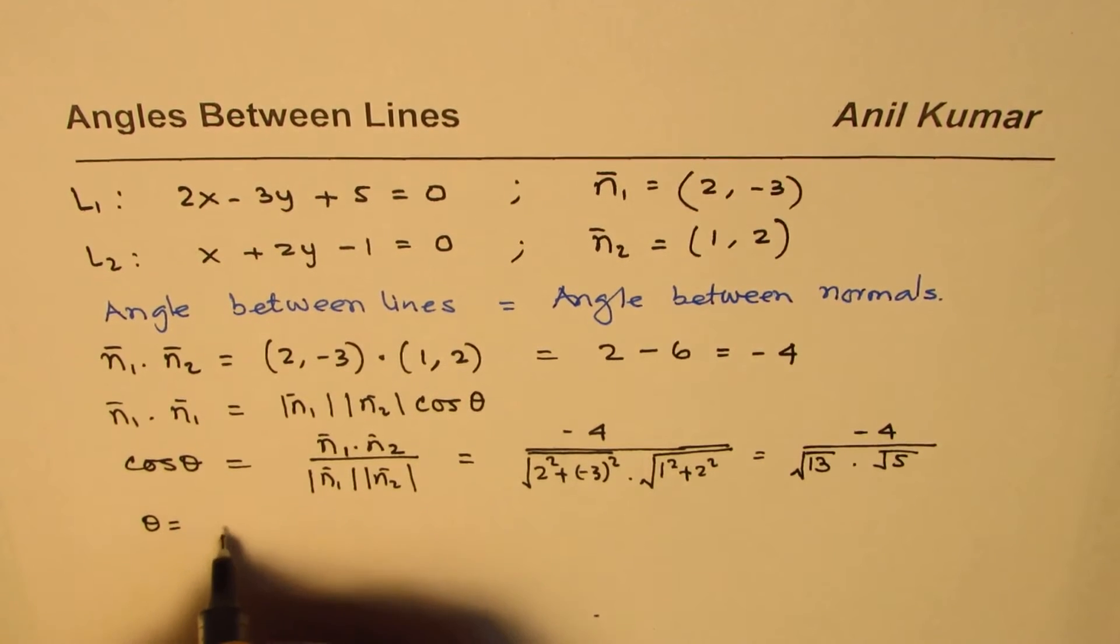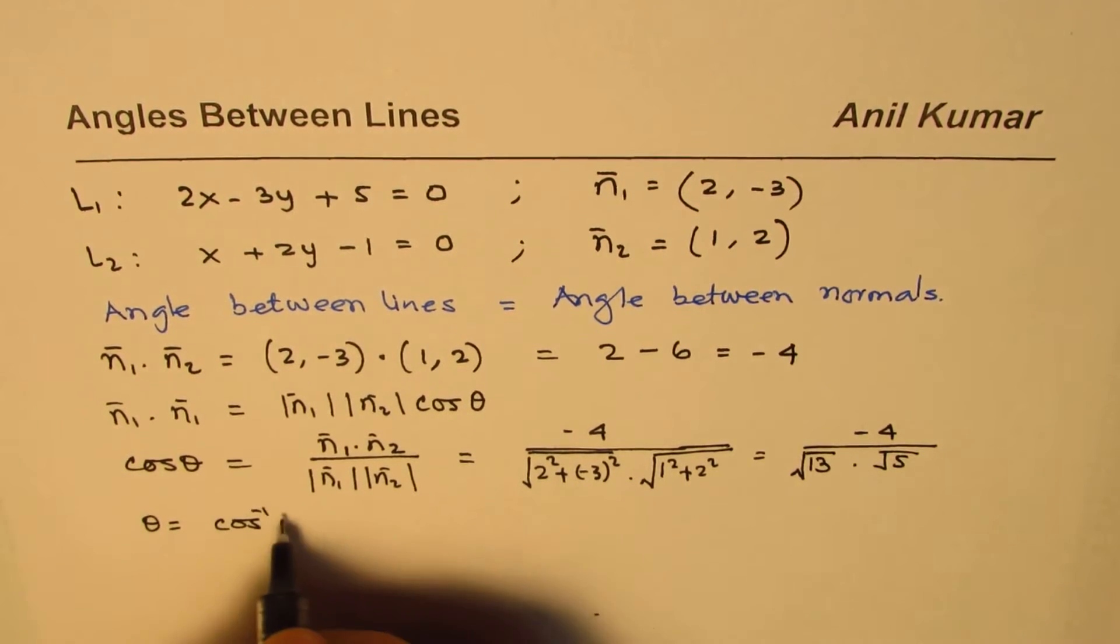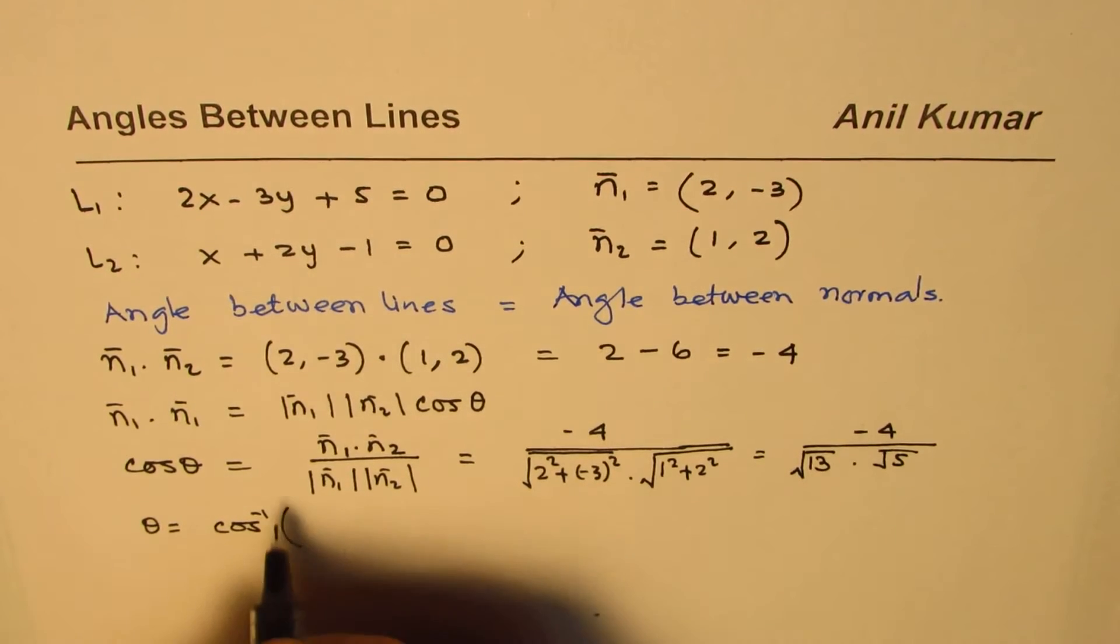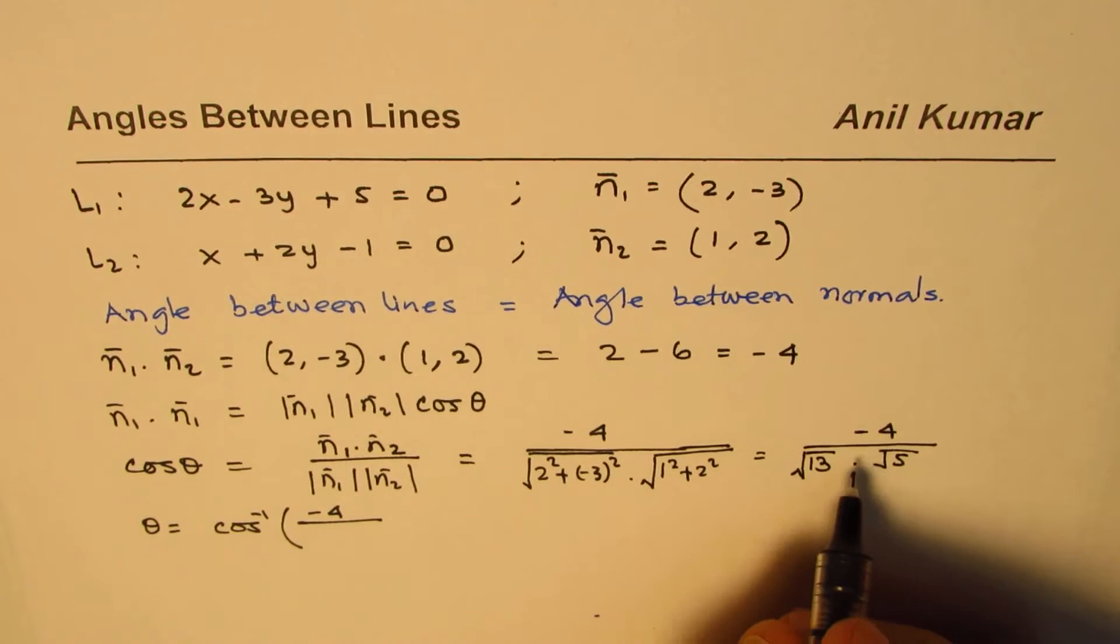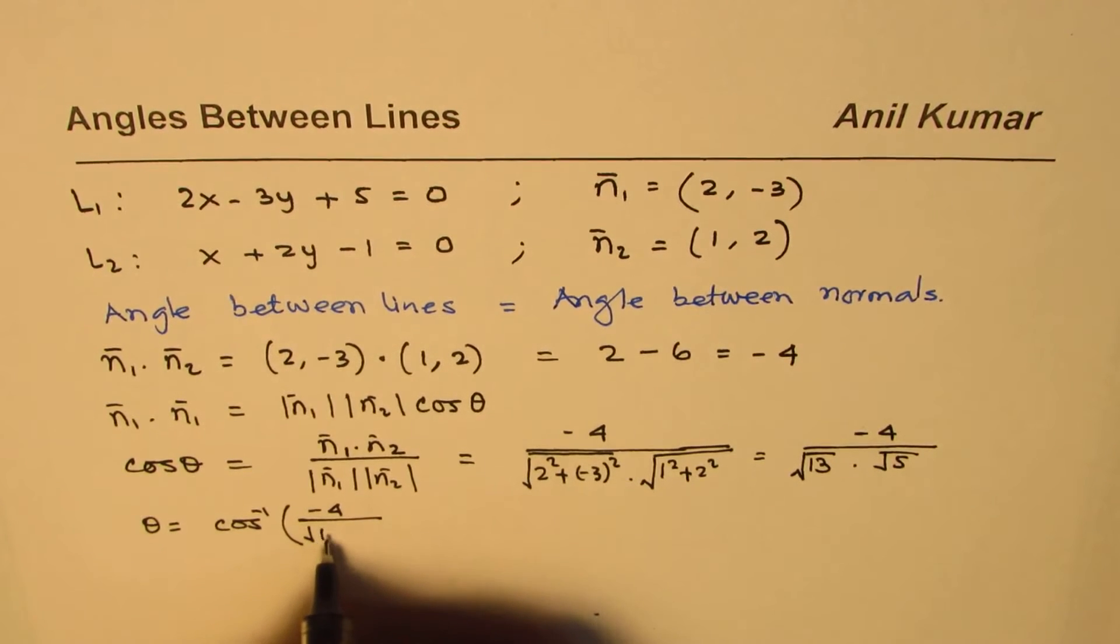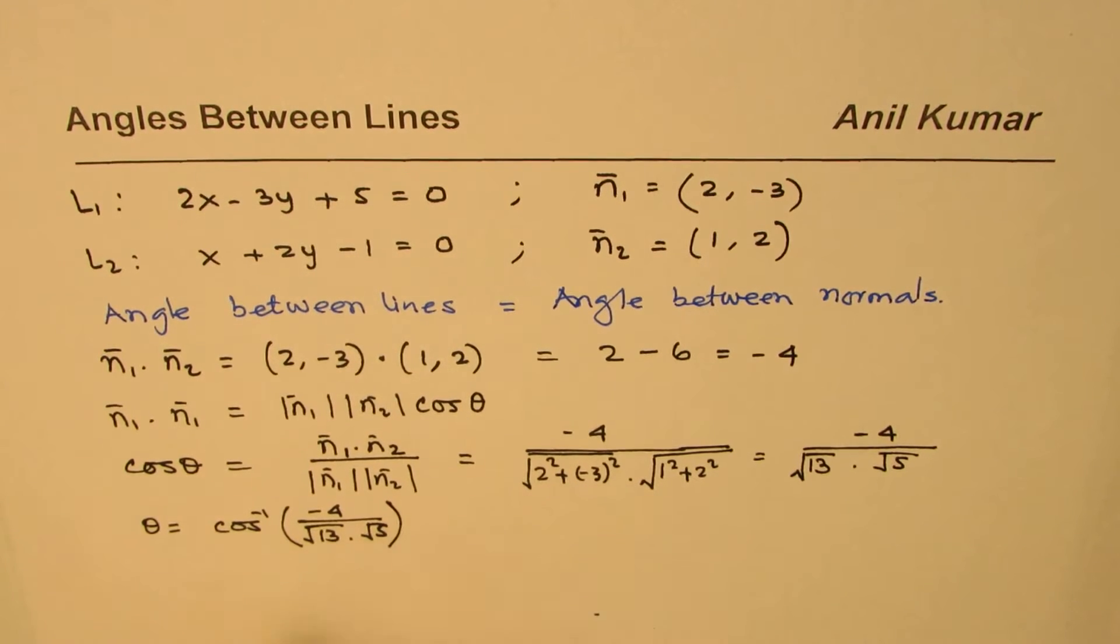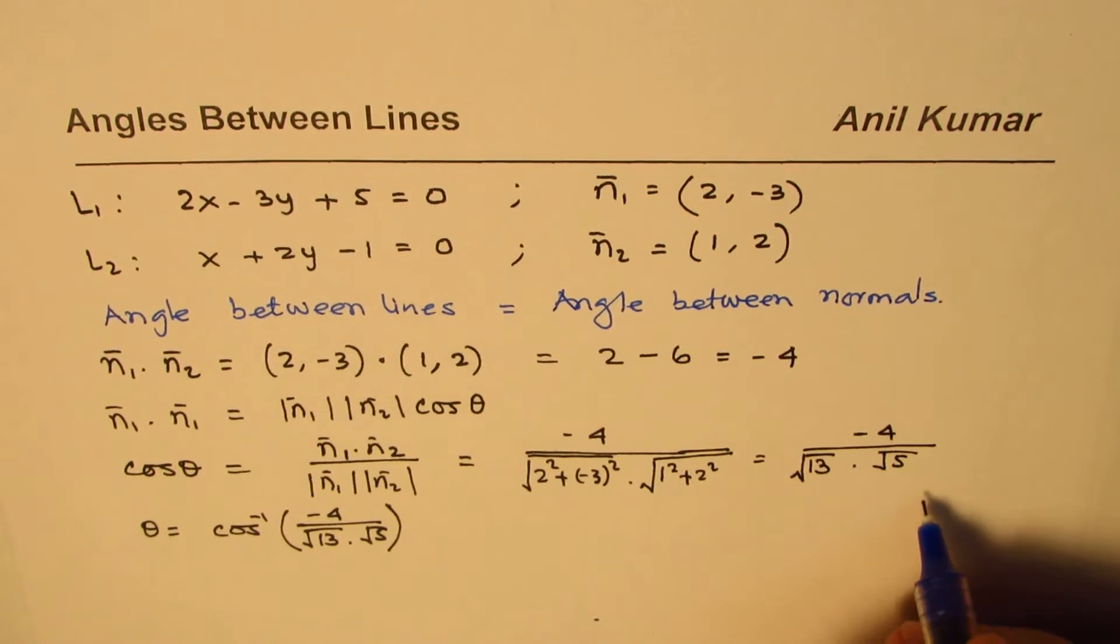So that is cosine of theta, so we can say theta is equals to cos inverse of negative 4 divided by square root of 13 times square root of 5. Since we have a negative value here, let's understand that concept.